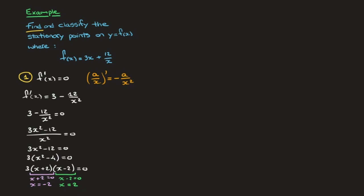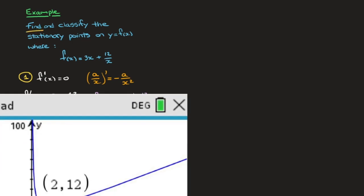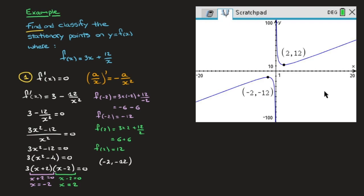Now that we have the x-coordinates, we need to calculate the corresponding y-coordinates by plugging each value back into the original function. For x = −2: f(−2) = 3(−2) + 12/(−2) = −6 − 6 = −12. So the stationary point at x = −2 has y-coordinate −12. For x = 2: f(2) = 3(2) + 12/2 = 6 + 6 = 12. The two stationary points have coordinates (−2, −12) and (2, 12).